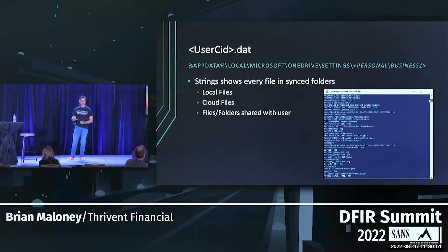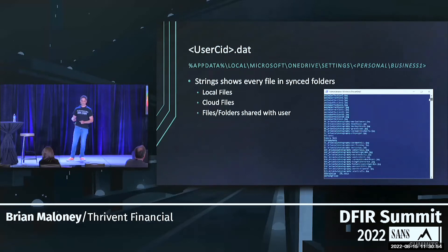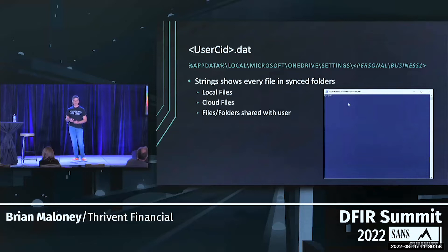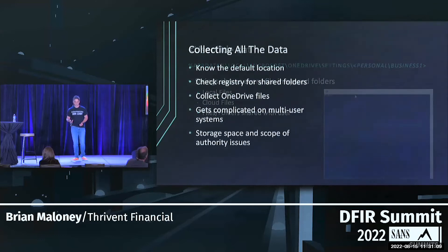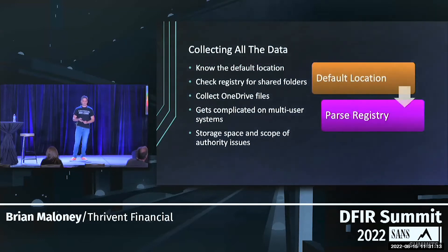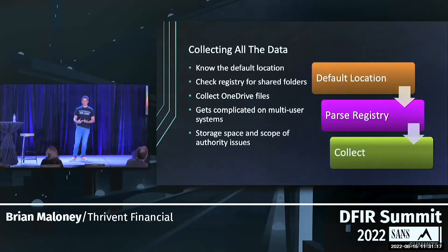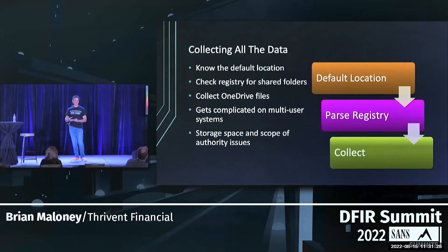The user.sid.dat file stores local files and cloud files. If we run strings on it, it'll dump out a list of the files and folders that are in OneDrive, but there's no folder structure to it. We know the default location, but in order to collect everything we need to check the registry. Once we find all the locations where the files are, we can start our OneDrive collection. This gets complicated on multi-user systems because if the user wasn't logged in, their registry hive might not be mounted — so you'll have to run an initial collection, parse that data out, and then go back and collect all the files.